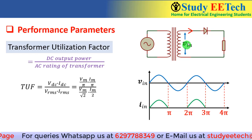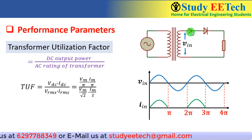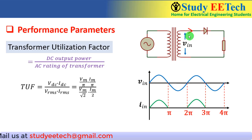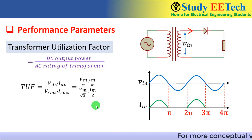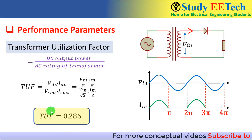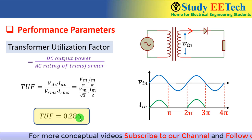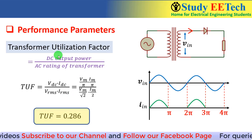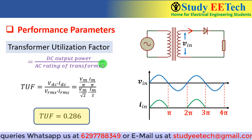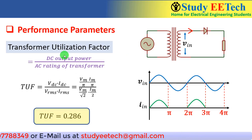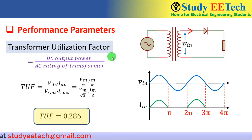So the secondary VA rating of the transformer is Vrms × Irms = (Vm / √2) × (Im / 2). This VA rating is the same on the primary side because current only flows when the diode conducts, so no current flows in the primary during the negative half cycle either. From this calculation, the transformer utilization factor (TUF) comes to be 0.286. The physical significance is: if the DC output power is 100 kW, then by back-calculation using TUF = 0.286, we can find the required AC rating of the transformer to be 100 kW / 0.286.